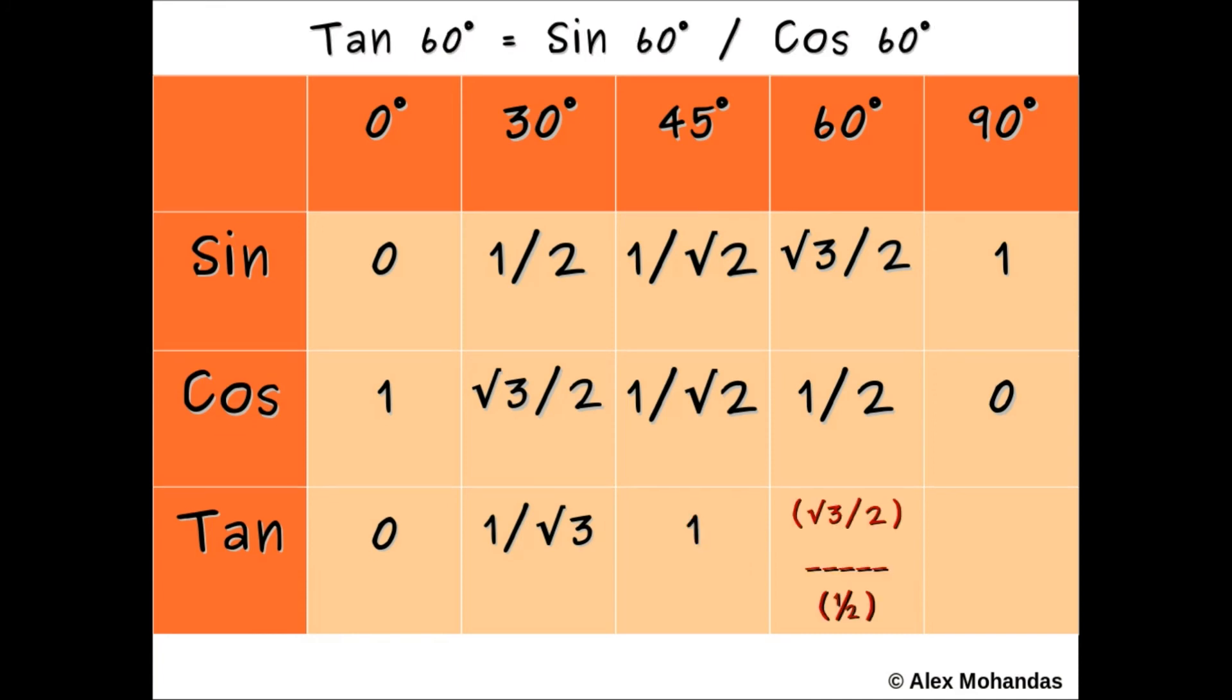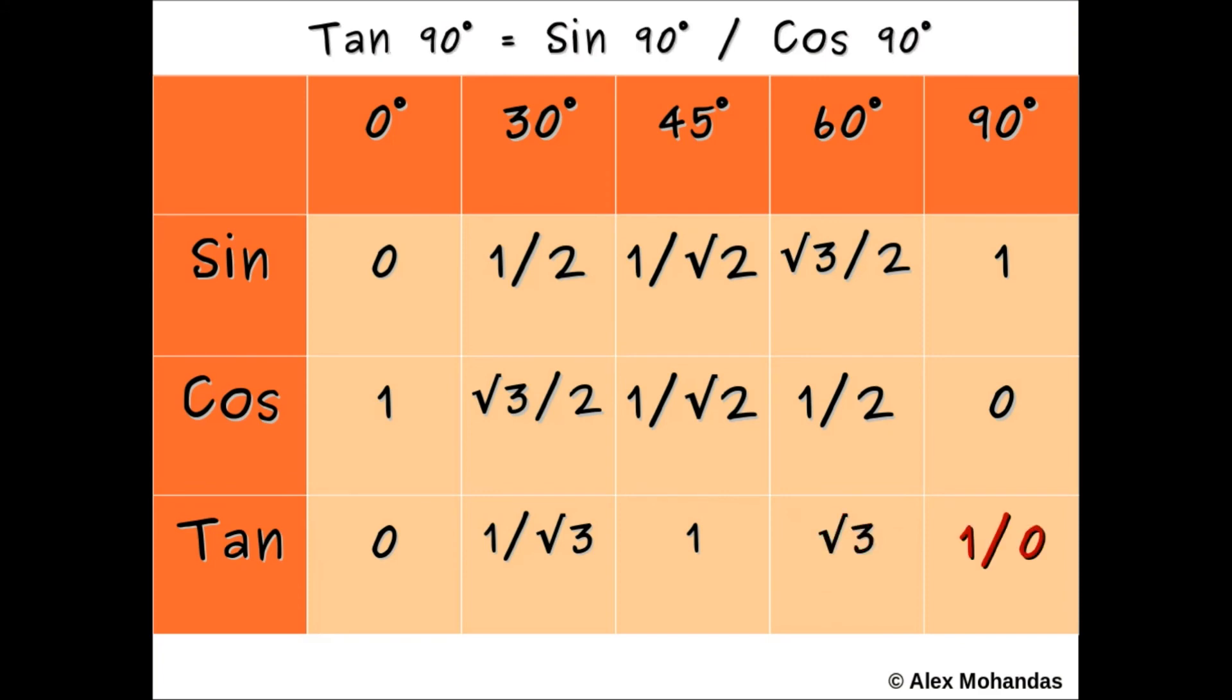Tan 90 equals sine 90 divided by cos 90.